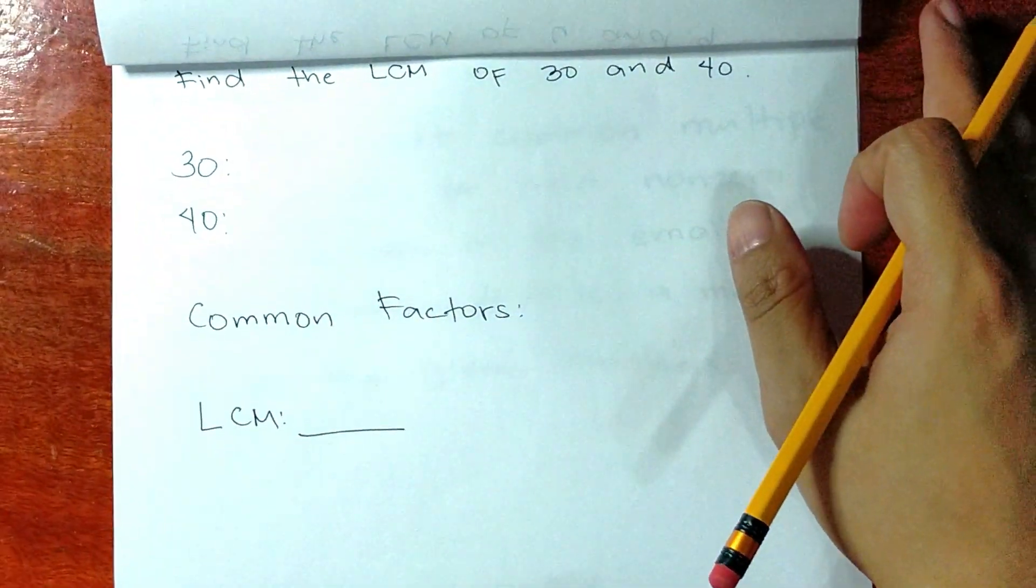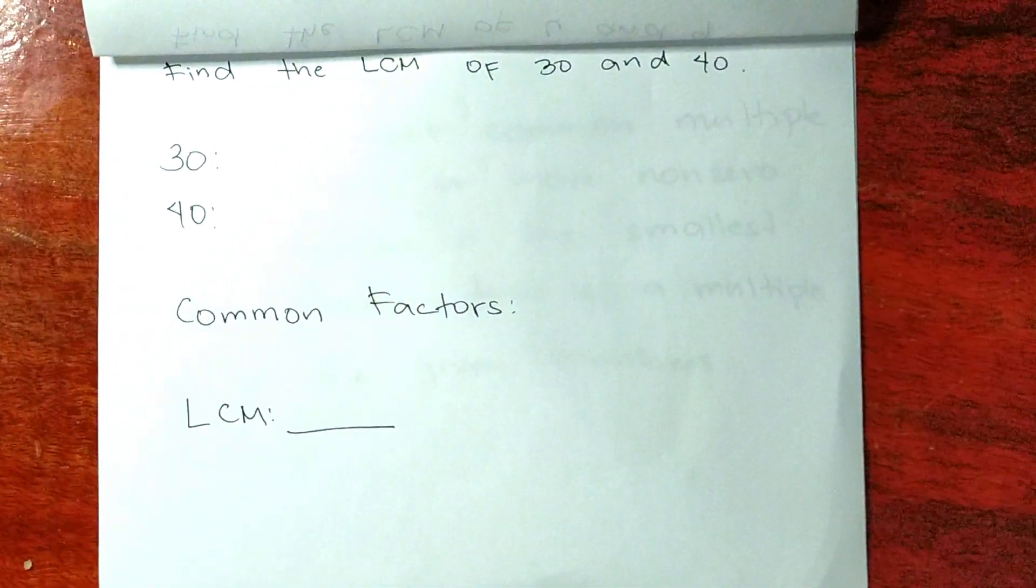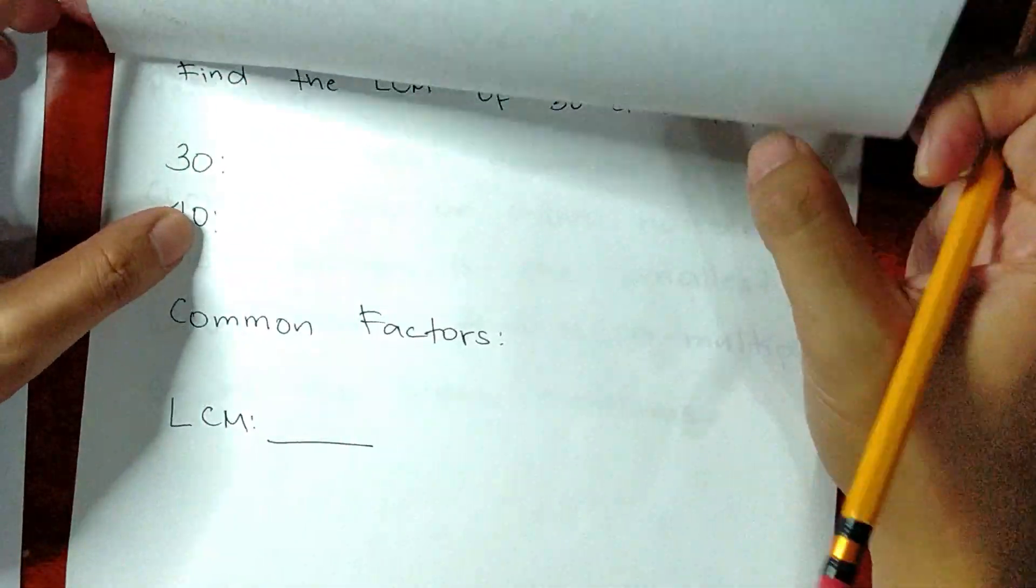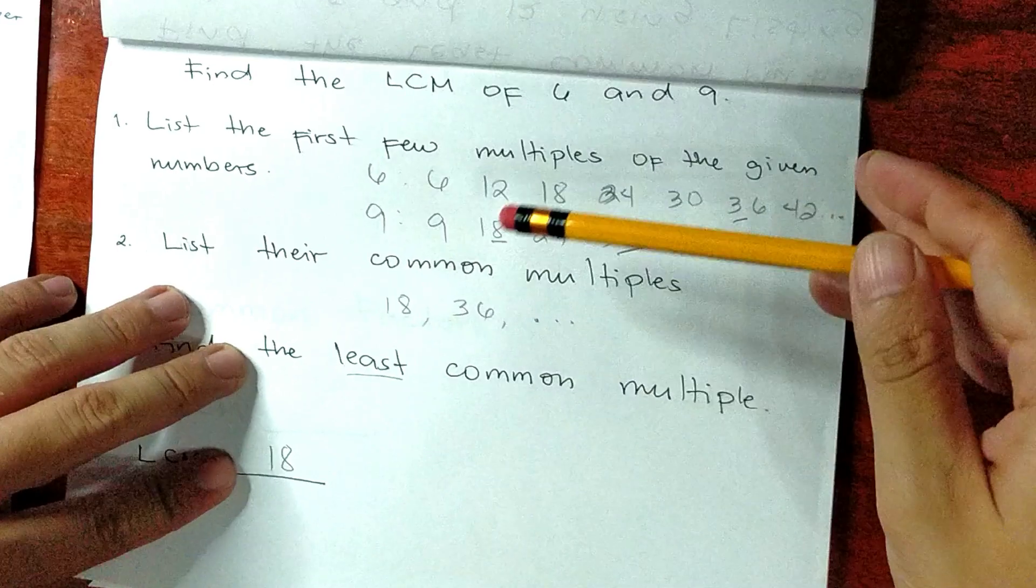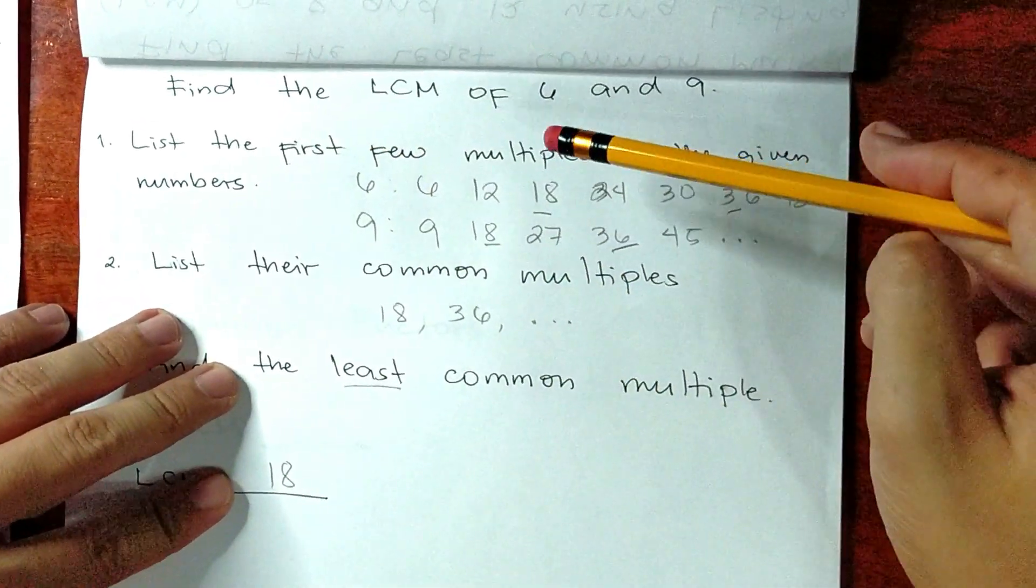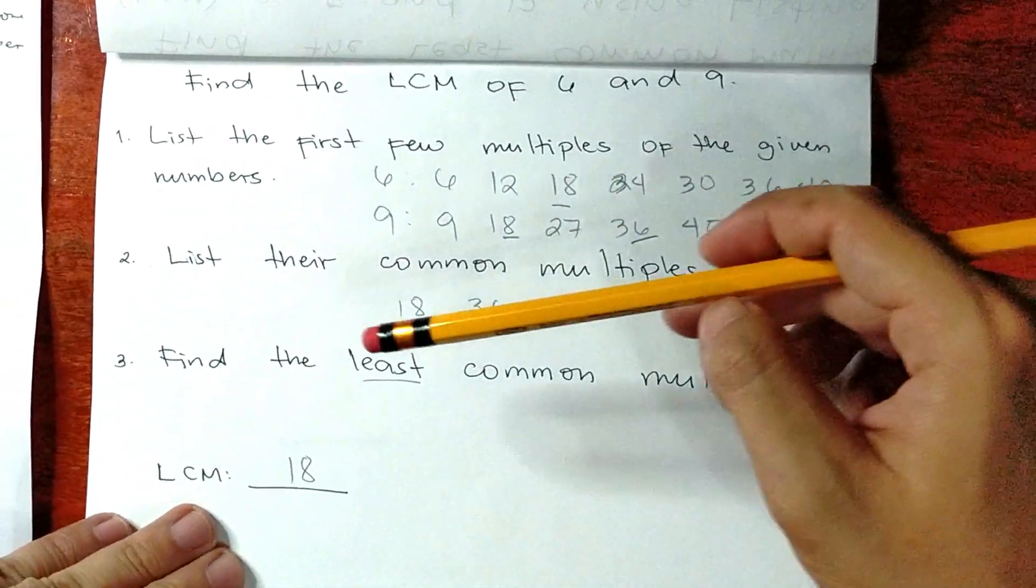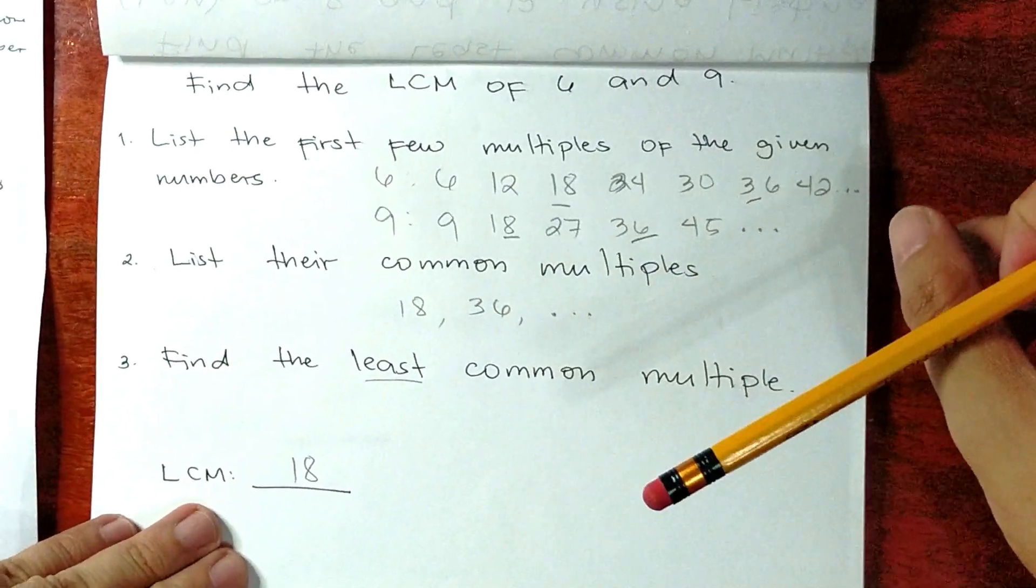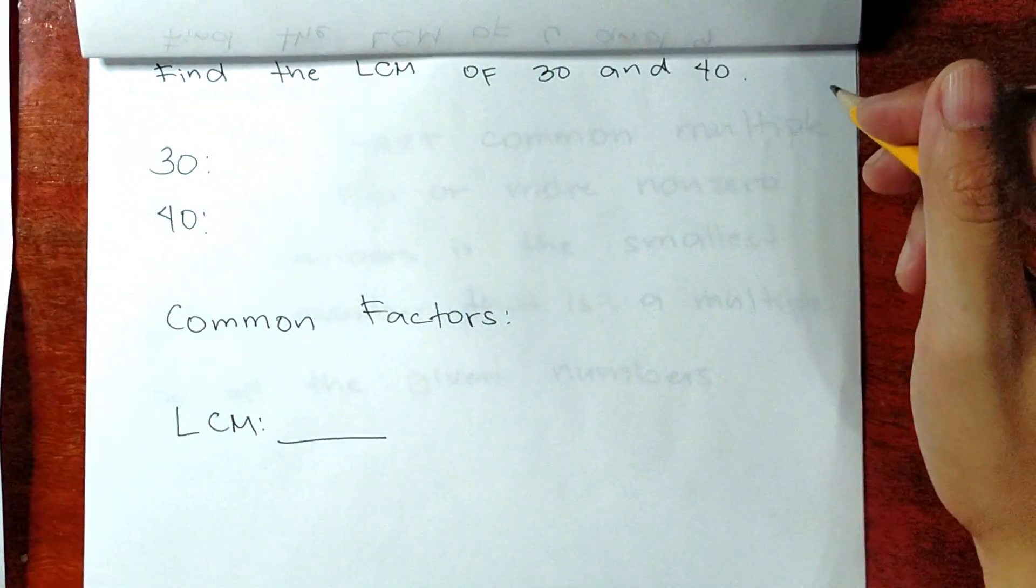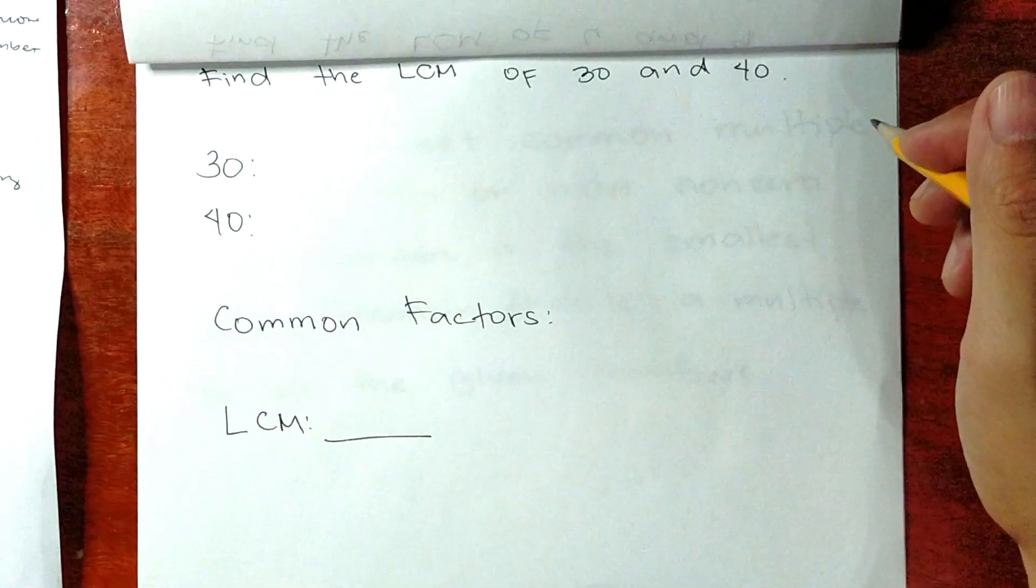Now, it's your turn. Find the LCM of 30 and 40 in one minute. Do not forget the steps in finding the LCM. First, list the few multiples of the given numbers. Second, list their common multiples. And third, find the least common multiple. I'll give you one minute to answer this one. Your timer starts now.